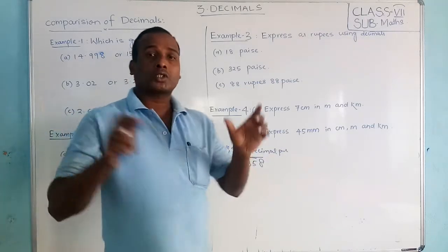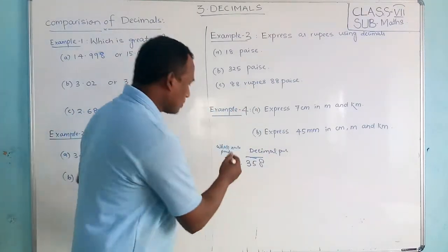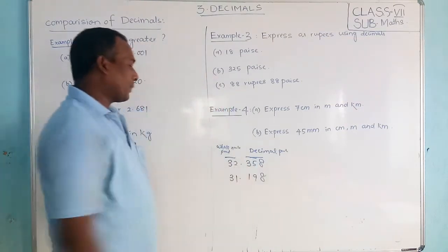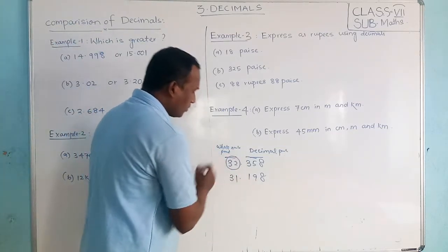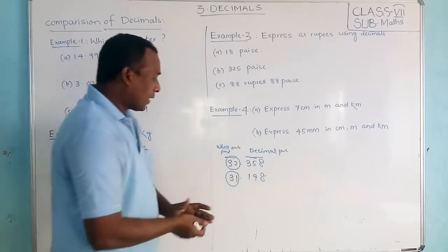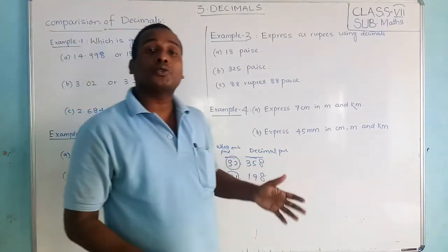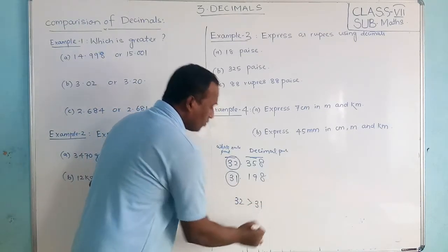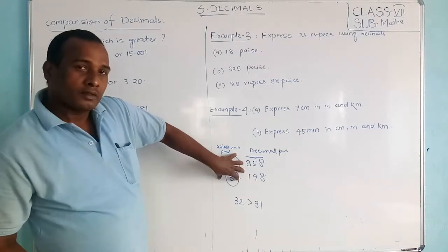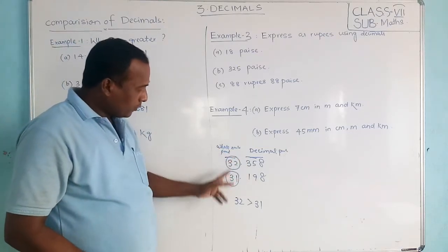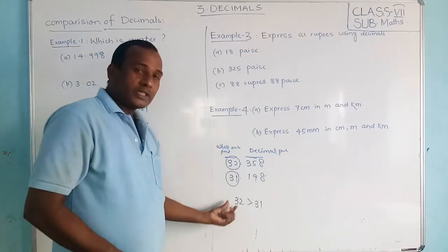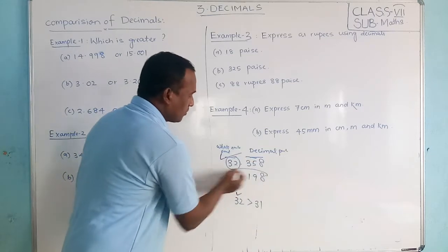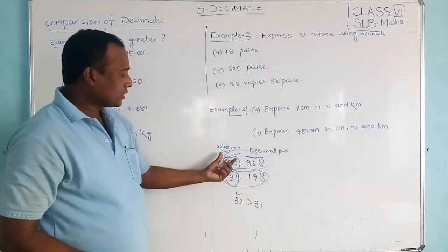Whenever you compare decimals, first check the integral part. For example, suppose we are comparing 31.198 and 32.something — this number's integral part is 32, and this number's integral part is 31. Compare the integral parts: 32 is greater than 31, so this number is greater. Whenever the integral parts differ, you can determine which number is greater right there.